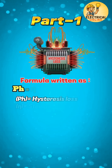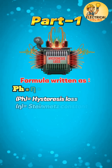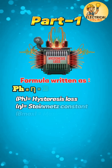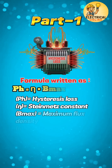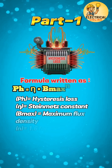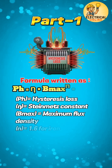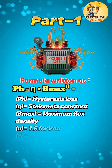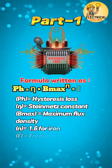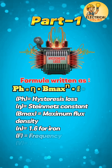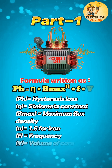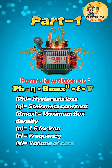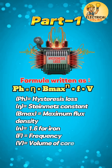Hysteresis loss pH equals Steinmetz constant eta, times maximum flux density — with power 1.6 for iron — B_max power n, multiplied by frequency f, times volume of core V.